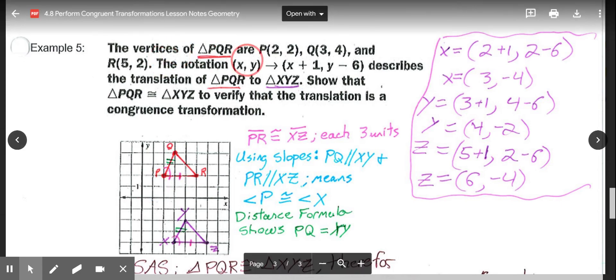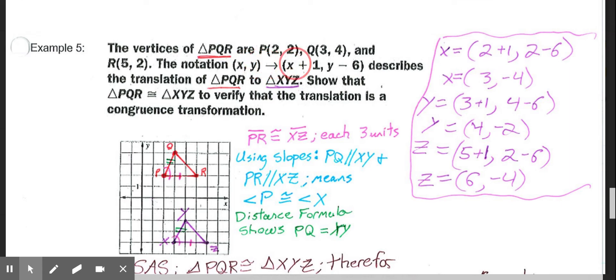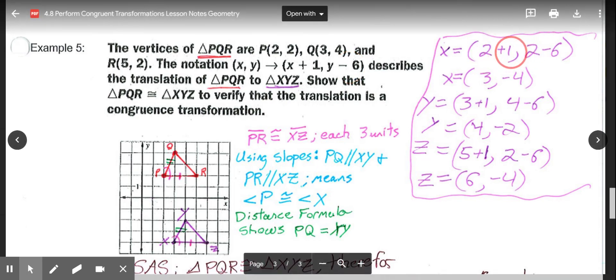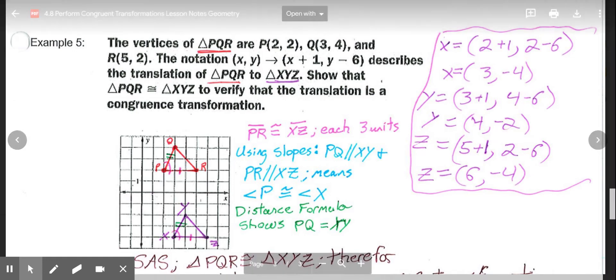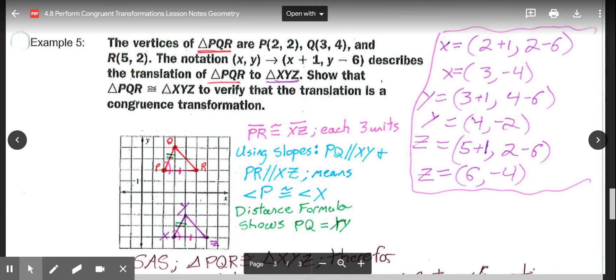Then they give us the notation of the translation. So XY is translated (x + 1, y - 6). Tells me that it's going to move right 1 and down 6. So I'm going to take each of my points, add 1 to the x value, subtract 6 from the y. So my new points for X, Y, and Z: X matches up with P, so I'm using (2, 2). So 2 plus 1 and 2 minus 6 gives me (3, -4). Y matches up with Q, so to figure out Y we're going to use Q (3, 4) to get (4, -2). And Z corresponds with R. So we'll use the (5, 2) to figure out Z's points: 5 plus 1, 2 minus 6 is at (6, -4).